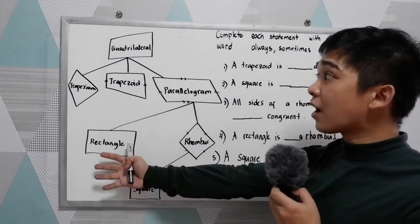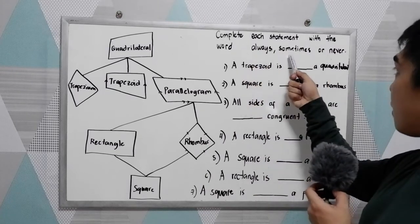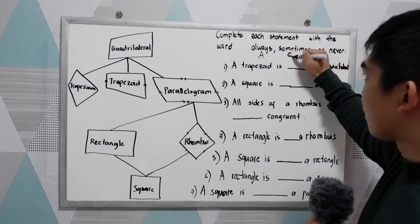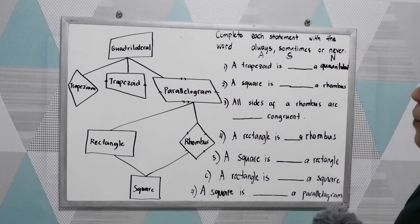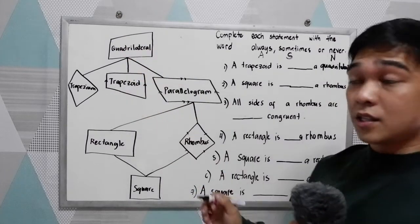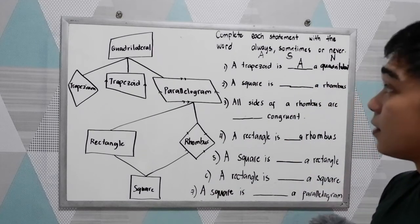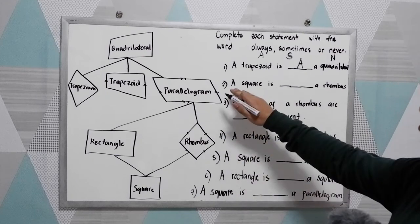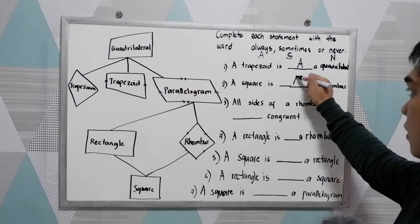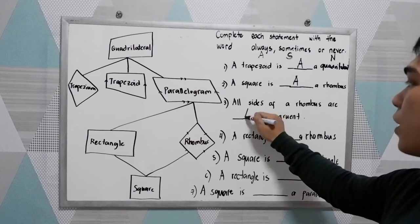Now let us use this schematic diagram to answer these problems. Complete each statement with the word always, sometimes, or never — using A, S, or N. A trapezoid is always a quadrilateral, because a trapezoid has four sides. A square is always a rhombus. All sides of a rhombus are always congruent.